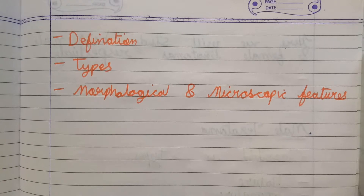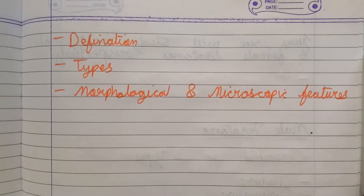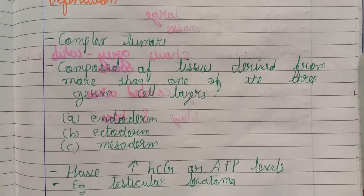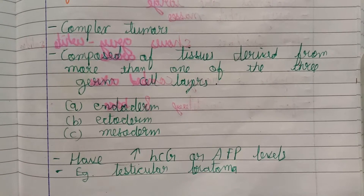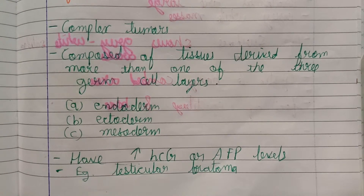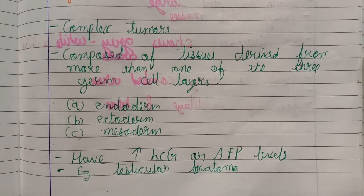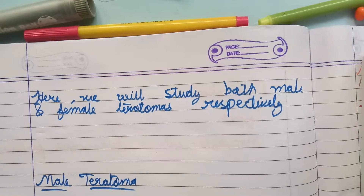We will go through its definition, types, morphological and microscopical features. So starting from the definition: a teratoma is a complex tumor composed of tissue derived from more than one of the three germ layers — endoderm, ectoderm, and mesoderm. It is associated with elevated hCG and AFP levels. Testicular teratoma is a good example.